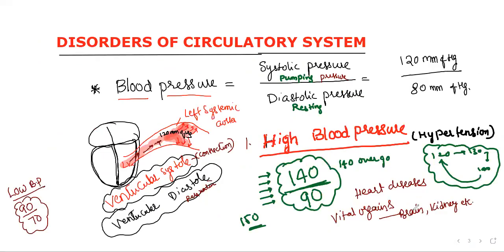Finally, we discussed high blood pressure: normal blood pressure is 120 by 80; if it is more than 140 by 90 we say high blood pressure — hypertension. This is all about the disorders of the circulatory system.